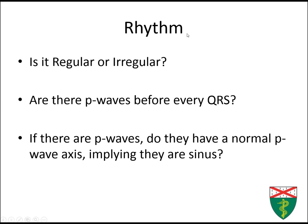For rhythm, the second step, you want to see if it is a regular or irregular rhythm — whether the distance between QRS complexes is constant (regular) or not constant (irregular). Then you want to see if there is a P-wave before every QRS, and from this you can infer that the P-wave is the source of depolarization causing the ventricles to depolarize. If there's a P-wave, you want to know if there's a normal P-wave axis, which could imply it's coming from the sinus node.